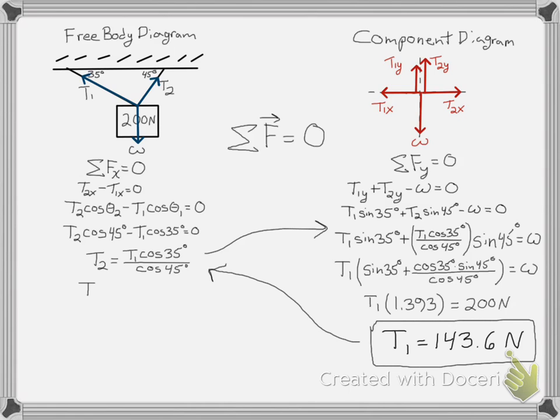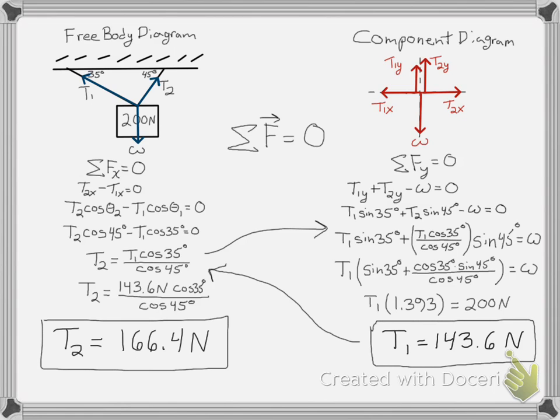Now I'll substitute that into the x component equations and I can easily solve for the second tension. At this point, I now have my unique solution because only one combination will work here, and I've found both tensions. And I'm done.